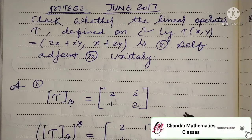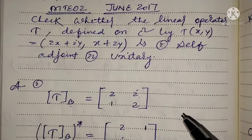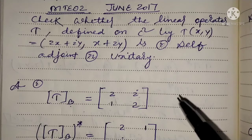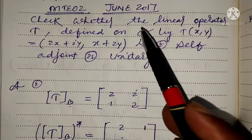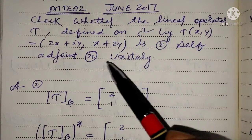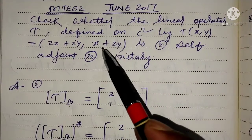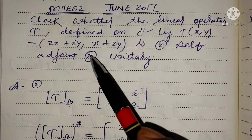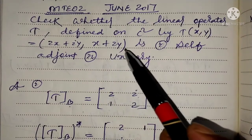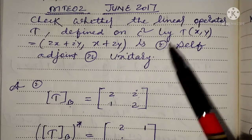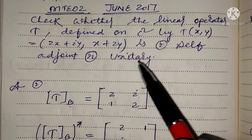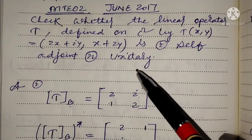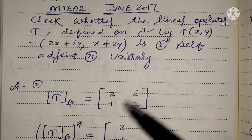In previous years, self-adjoint operator or unitary operator questions have been asked. The first question is whether the linear operator T is defined on C² by T of (x, y) equal to (2x + iy, x + 2y) is self-adjoint and unitary. We have to check whether T is self-adjoint or unitary.